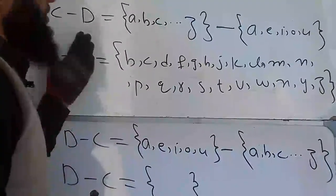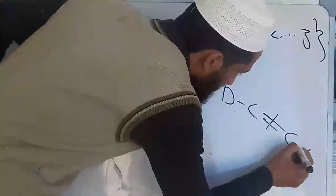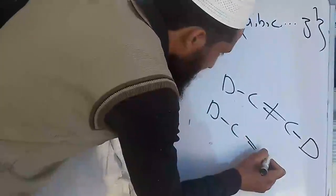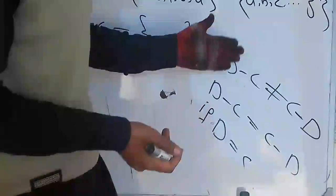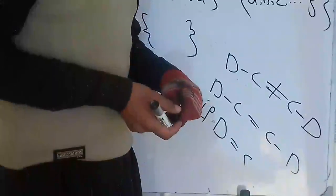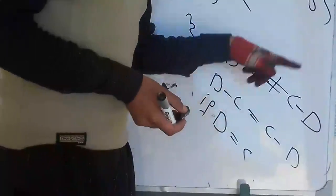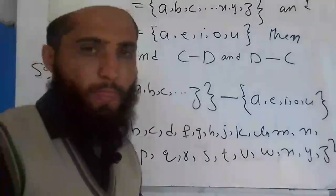D difference C is not equal to C difference D. That is, D difference C not equal to C difference D — unless D is equal to C; otherwise D difference C is not equal to C difference D. That is the symbol for 'not equal' in mathematics — a straight line through the equal sign. We will do one more exercise.